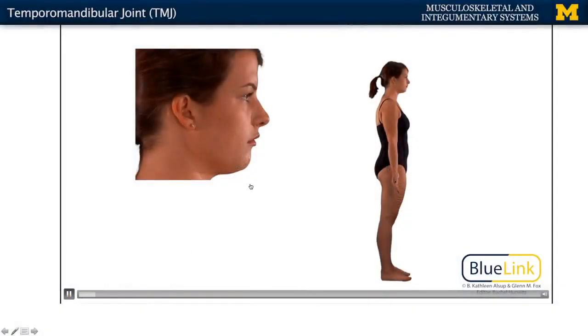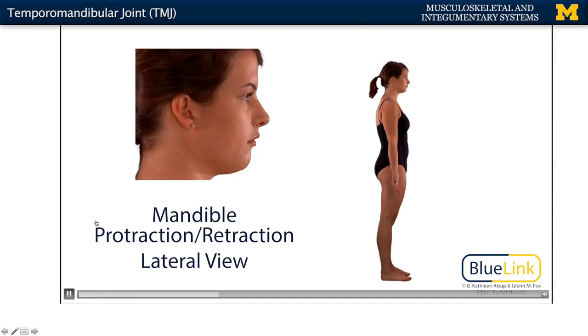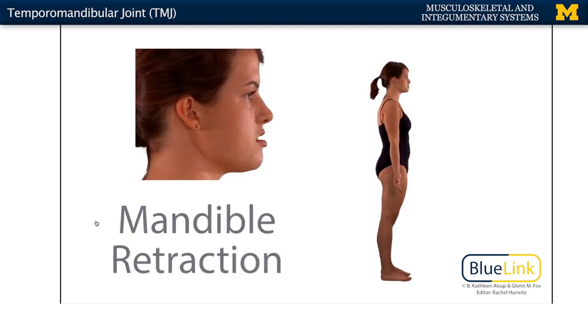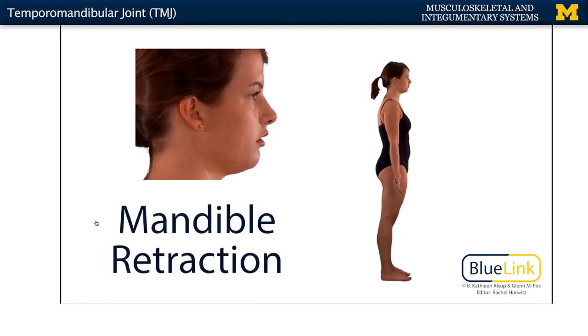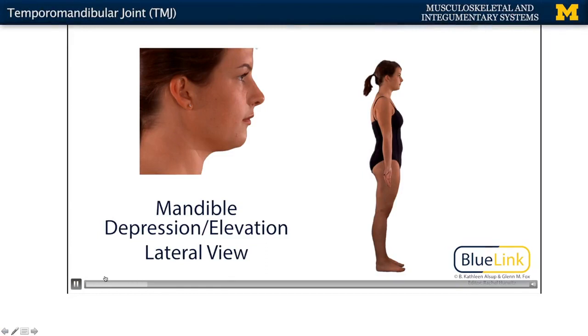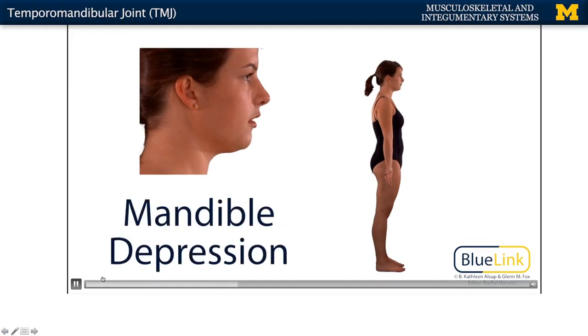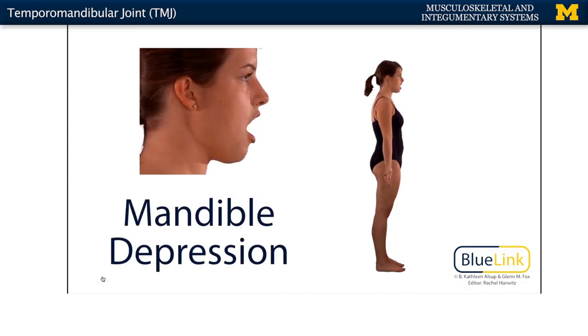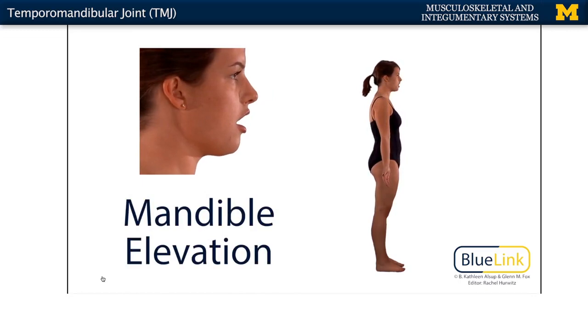Let's see what these movements look like. Protraction — think of jutting out your chin; retraction — going back to anatomical position. For the larger movement: depression is opening the mouth, with various range of motion possible, and elevation is returning to anatomical position. You can see the two main types of movements that can occur depending on which compartment is moving based on that articular disc.